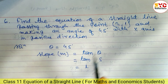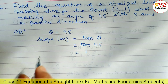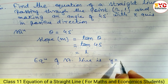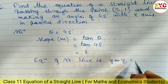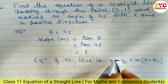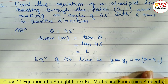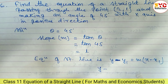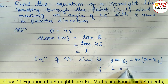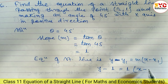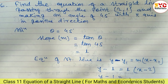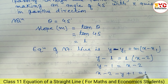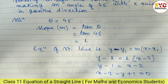Now we find the equation of the straight line passing through (2, 1) with slope 1. We use the one-point formula: y - y1 = m(x - x1). So y - 1 = 1·(x - 2), which gives y - 1 = x - 2. Taking both terms to one side: x - y - 2 + 1 = 0.